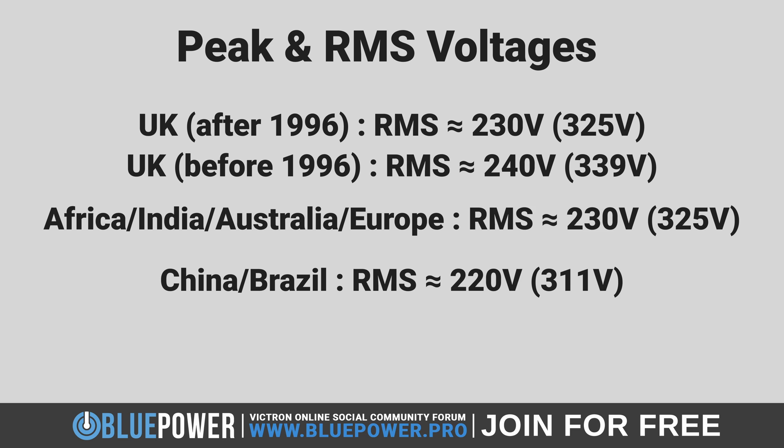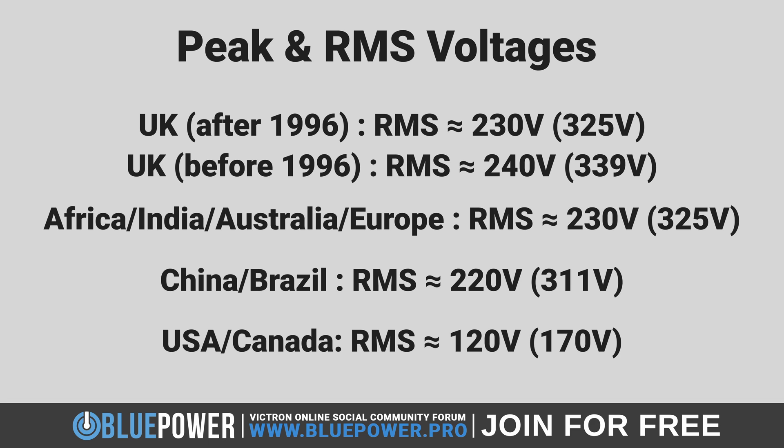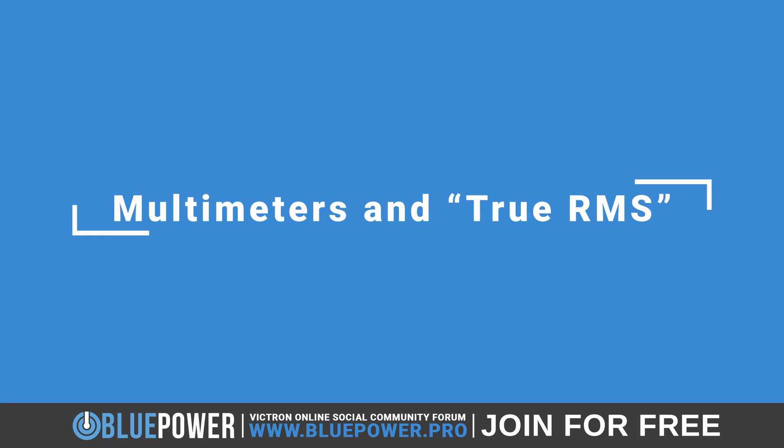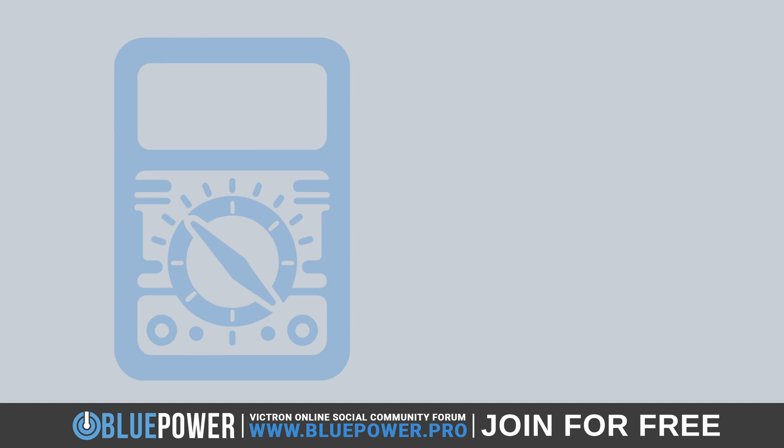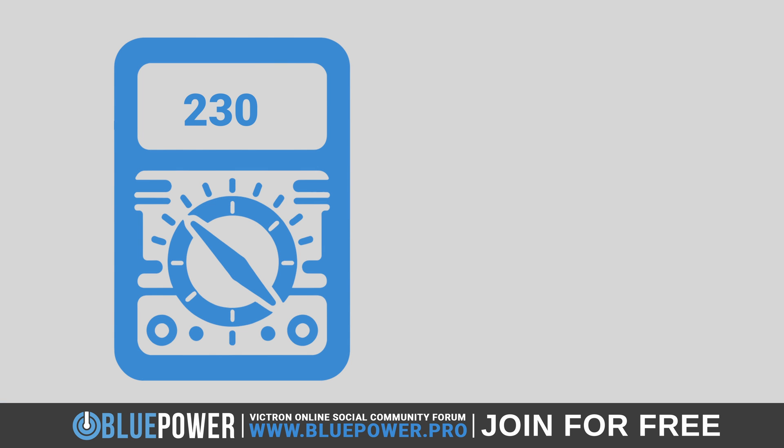In America and Canada, where the standard RMS voltage is 120 volts, the peak voltage would be around 170 volts. Note that multimeters are typically designed to measure RMS voltage for AC signals, not peak voltage. The standard multimeter will display the RMS value because this is more useful for most practical electrical measurements, especially in residential and commercial power systems.